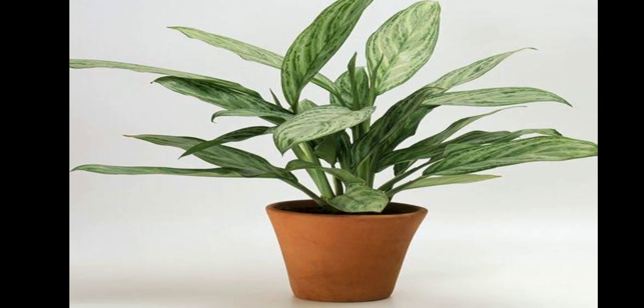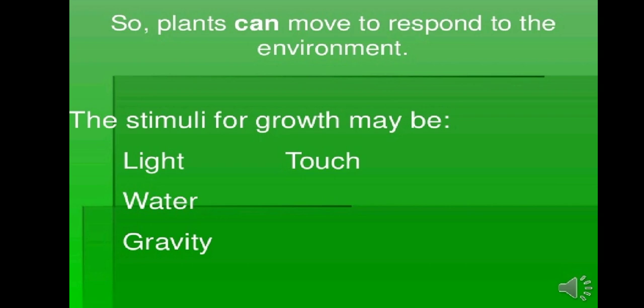Some kinds of plants move due to external stimuli. What is stimuli? Any kind of change in an organism which is produced from the environment that causes the organism to react or respond — that is what we call stimuli. So plants can move and respond to the environment. The stimuli may be in the form of light, water, gravity, touch, etc.